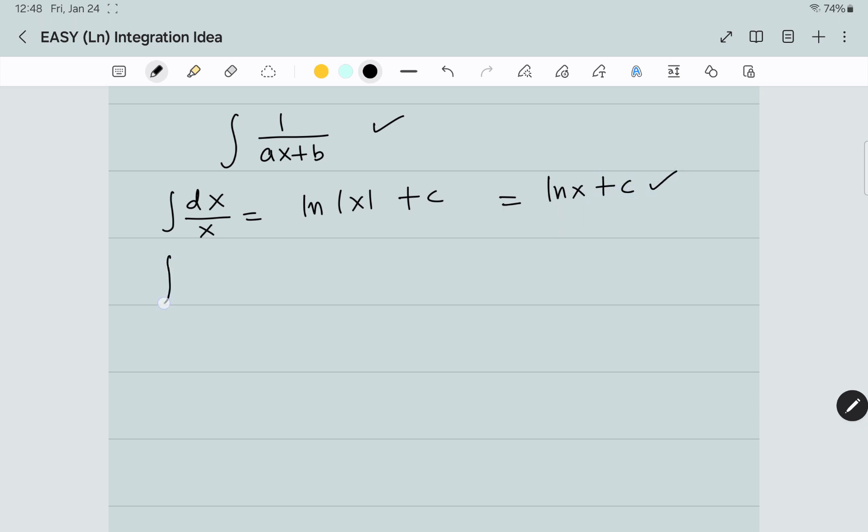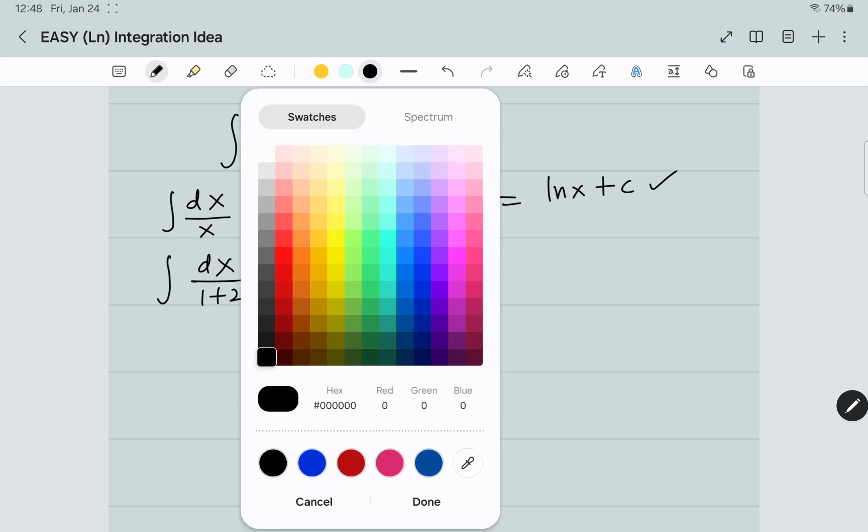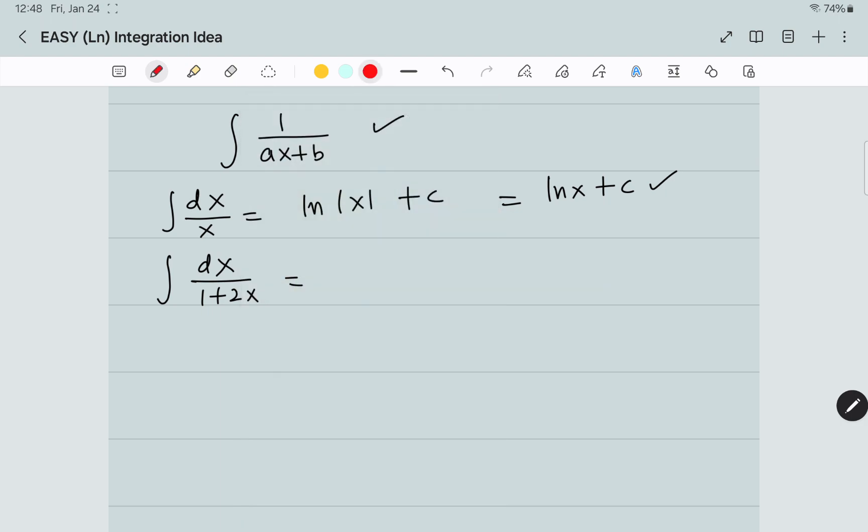Similarly, if the situation is a little changed, for example, dx divided by 1 plus 2x, what will be the answer? The derivative of 1 is 0 and the derivative of 2x is 2. Is that 2 available in the numerator? No. So what are we going to do? We are going to adjust this term.